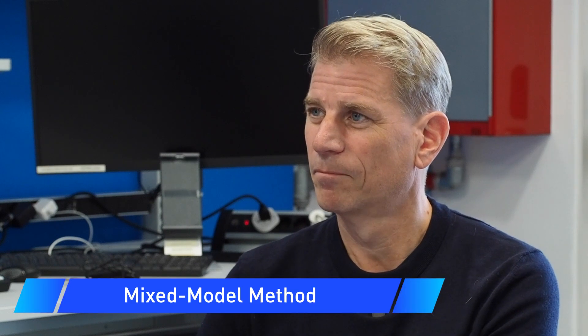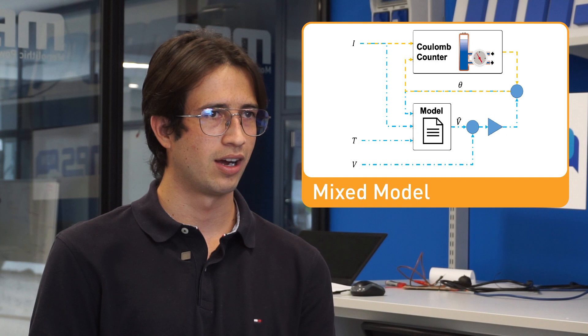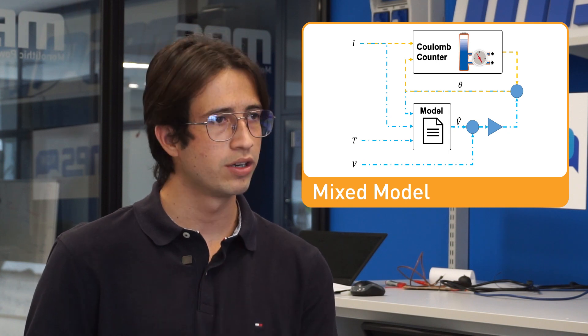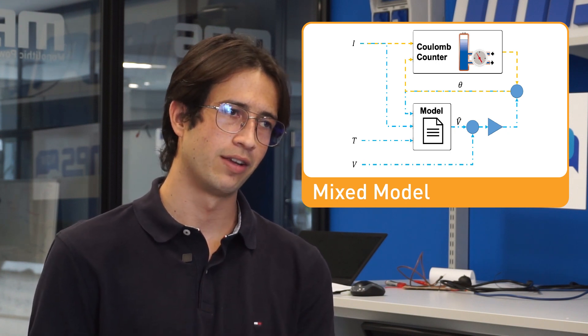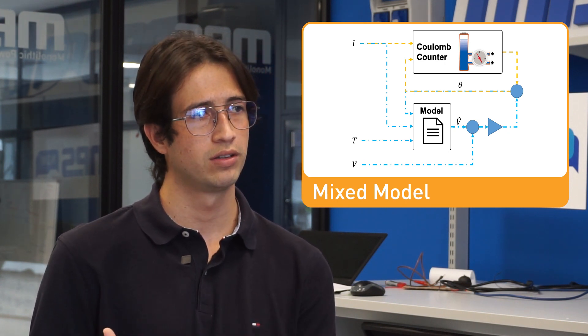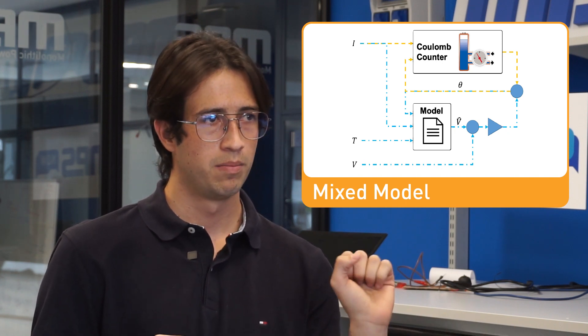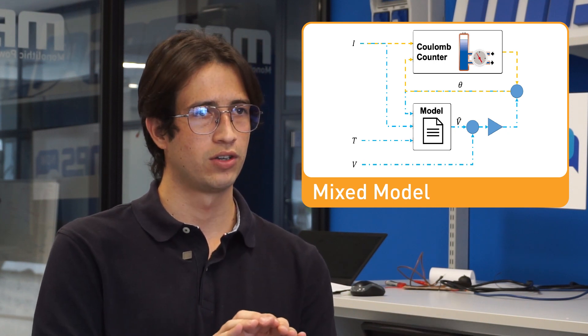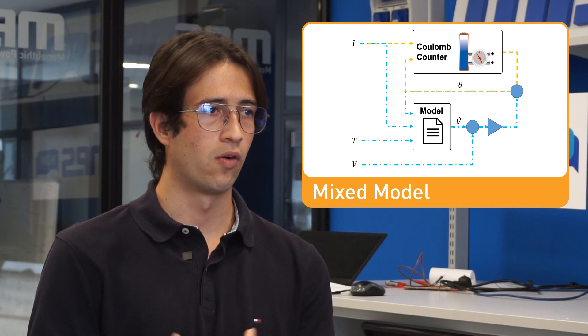Let's talk about the other methods people are using. We call it the mixed method, or mixed model method, which uses the coulomb counter but also uses a voltage method approach. This voltage method approach uses a very accurate mathematical cell model in order to estimate the voltage in each iteration. We basically use the coulomb counter measurements and this voltage estimation, and we combine them so we can deliver a really accurate state of charge.